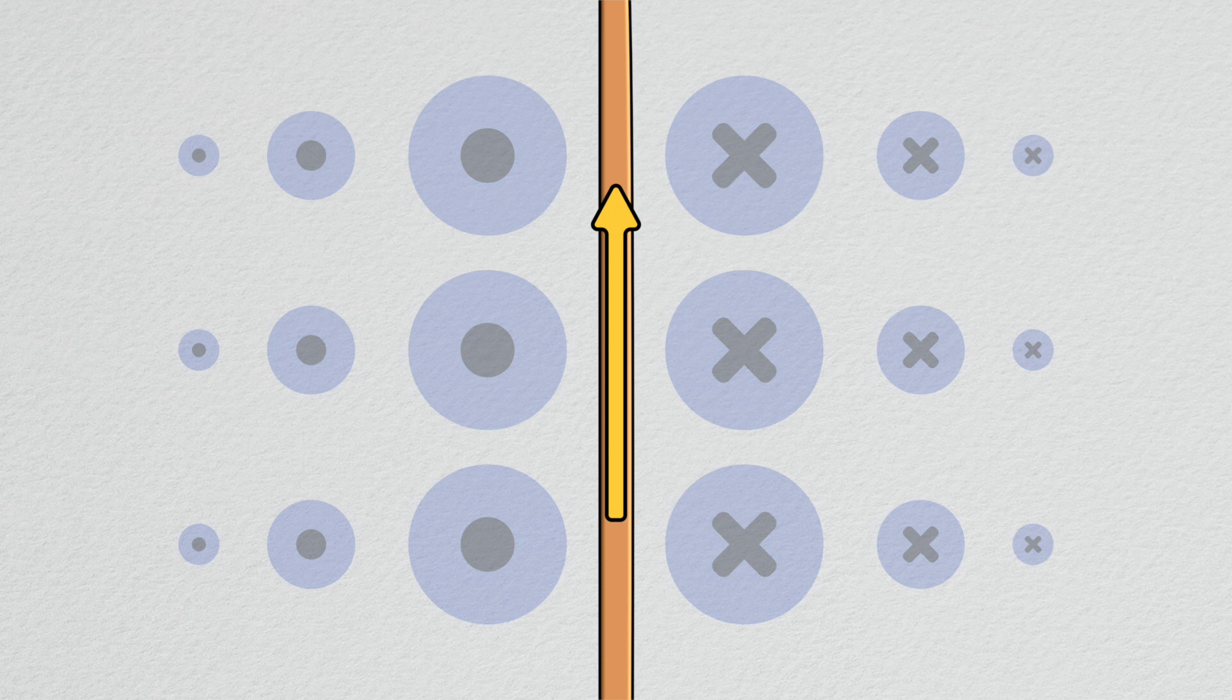For instance, a wire with charges moving through it will produce a magnetic field which revolves around it in a right-handed manner.